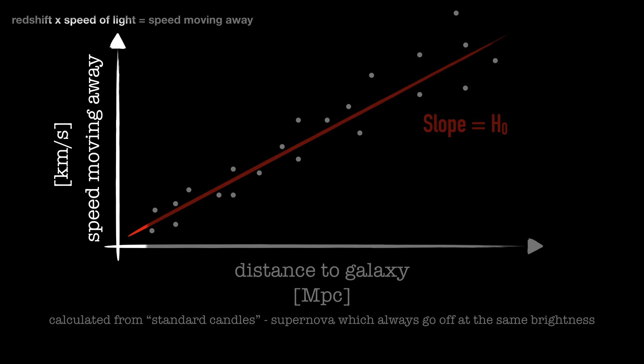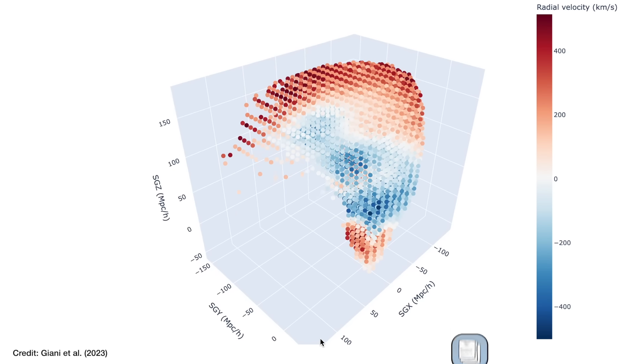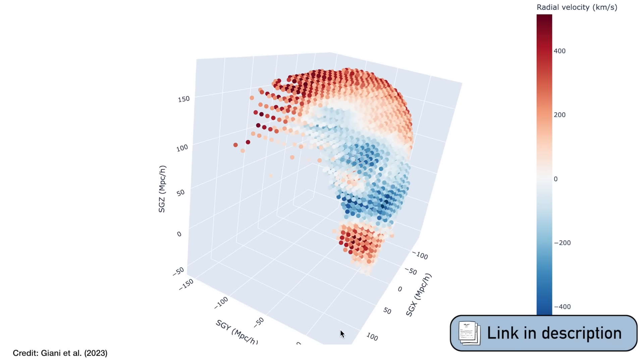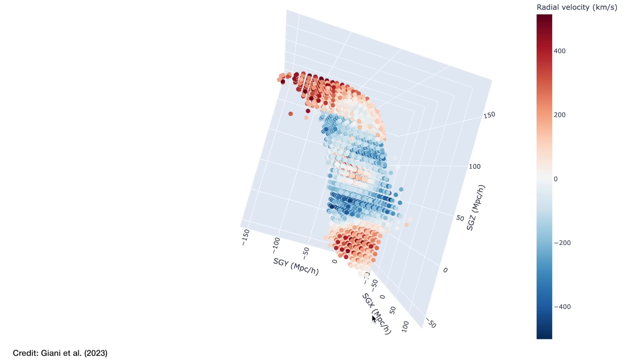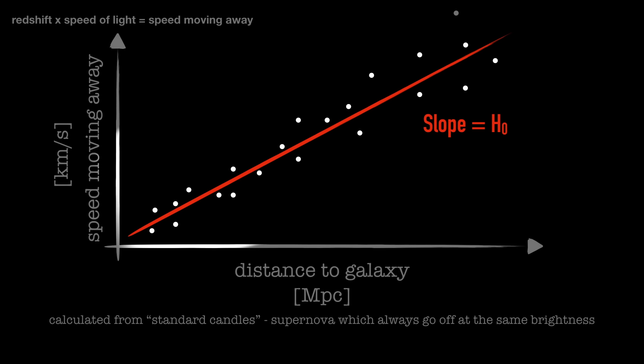But if the velocities we measure from redshifting are wrong because of peculiar motion in the cluster, the slope will also be wrong, and the rate you measure will be wrong. Plus, once you've got that slope — that rate of expansion — you use it to calibrate everything else. If you measure a galaxy's redshift, you use the slope to work out how far away it is. But if your slope is wrong, then the distances to those galaxies will also be wrong.